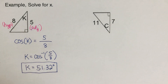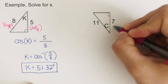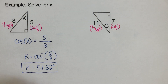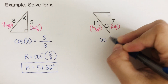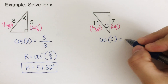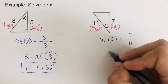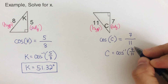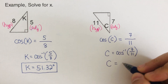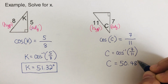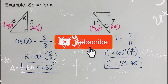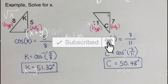Now for the last one: 7 is our adjacent and 11 is our hypotenuse, and we're looking for angle C. Cosine of angle C equals adjacent 7 over hypotenuse 11. So C equals the inverse cosine of 7 over 11, and using the calculator, C should be 50.48 degrees. If you find this video helpful, hit Like and Subscribe for more math videos!